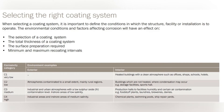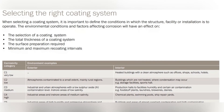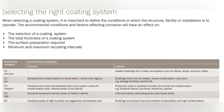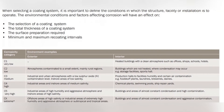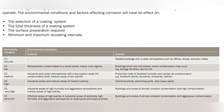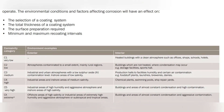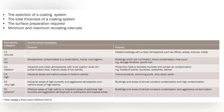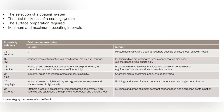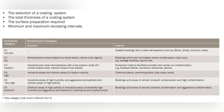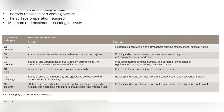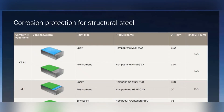When selecting a coating system, it is important to define the conditions in which the structure, facility, or installation is to operate. The environmental conditions and factors affecting corrosion will influence the selection of a coating system. Key considerations include the total thickness of the coating system, the surface preparation required, and minimum and maximum re-coating intervals.